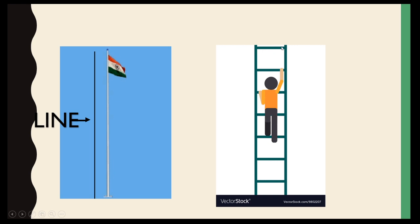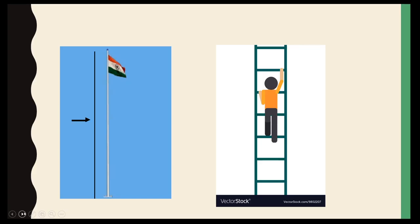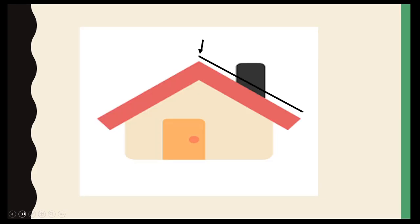Can you say this is also a line? This is also a line? No, because it is ending here. And we have learned that line can be extended in both directions without ends.